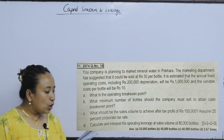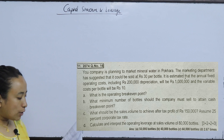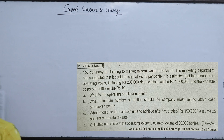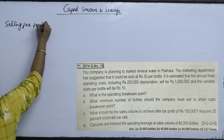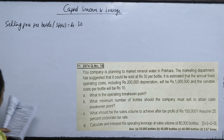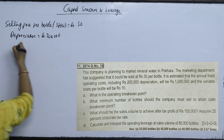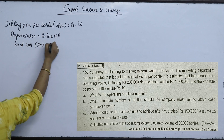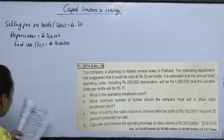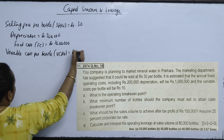The next question: a company is planning to market mineral water in Pokhara. The marketing department suggests it could be sold at Rs.30 per bottle. The annual fixed operating cost including depreciation is Rs.10,00,000, of which depreciation is Rs.2,00,000. The variable cost per bottle is Rs.10.